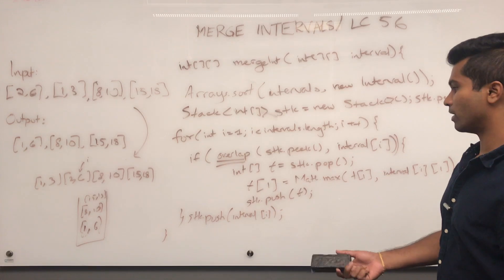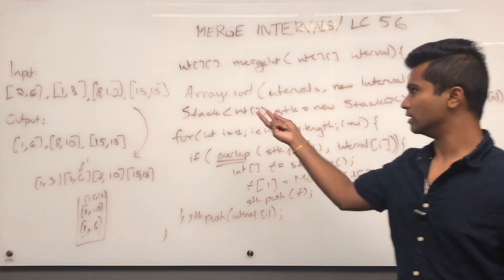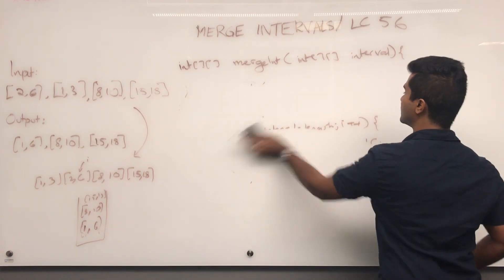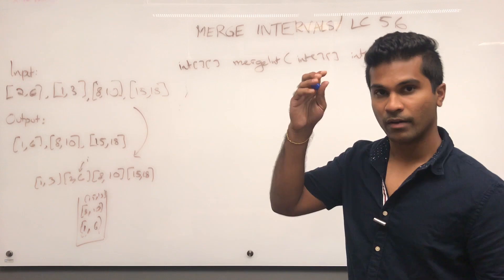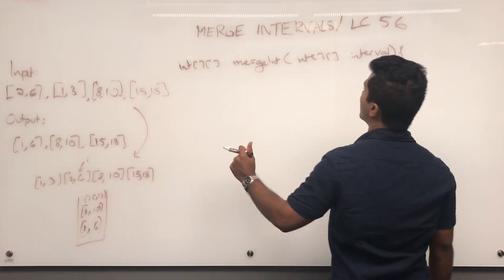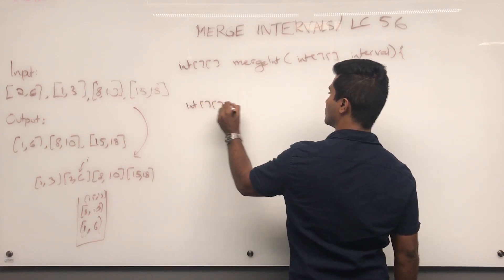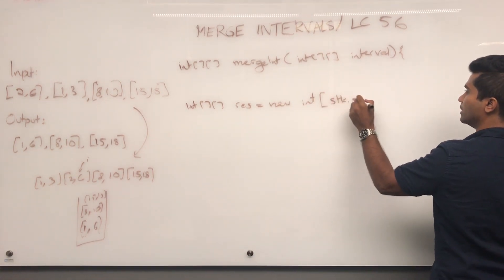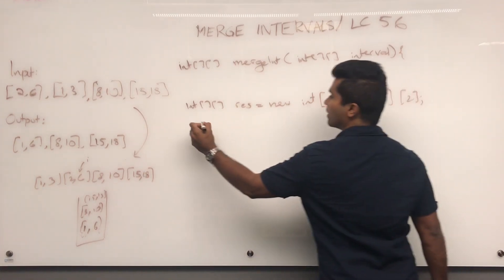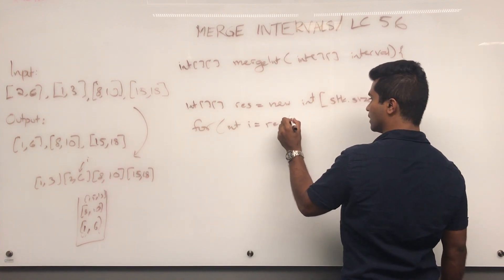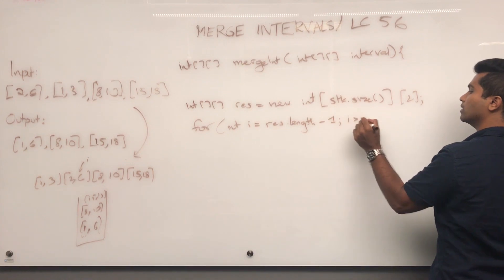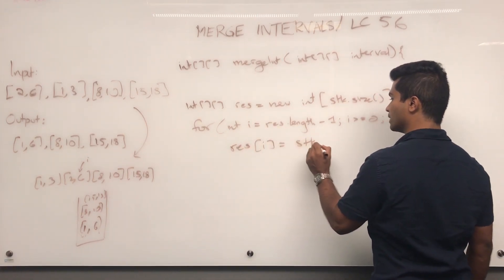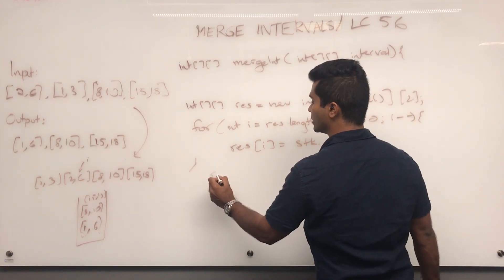Now, the next part, they want us to return this, so I just have to initialize a 2D grid of that size and then fill it up with the stack. Now stack is actually in the opposite direction, so it's not FIFO but LIFO. So I say int result is new int, how many rows do we have? We have to have how many rows the stack has, we have two columns. And then I'm going to say for int i equals res dot length minus 1, i is greater than or equal to 0, i minus minus. I'll say res of i is going to be just the pop of the stack. And then I return result.